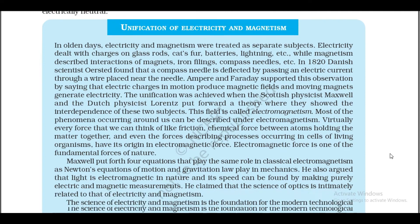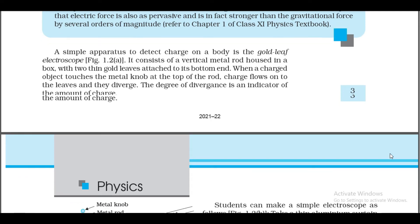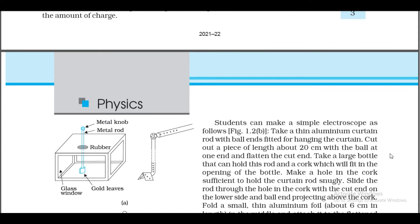A simple apparatus to detect charge on a body is the gold leaf electroscope (Figure 1.2a). It consists of a vertical metal rod housed in a box with two thin gold leaves attached to its bottom end. When a charged object touches the metal knob at the top of the rod, charge flows onto the leaves and they diverge. The degree of divergence is an indicator of the amount of charge.